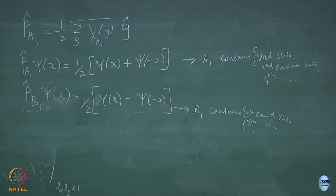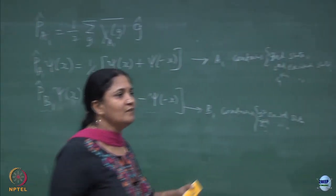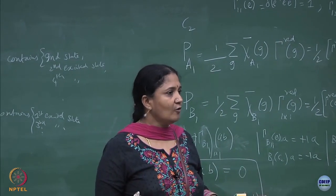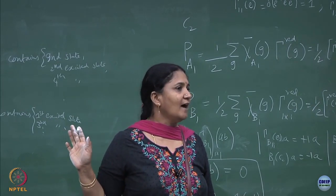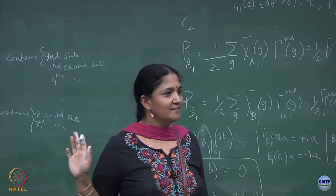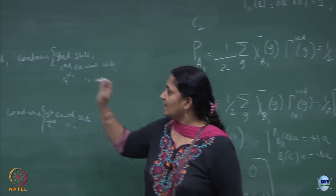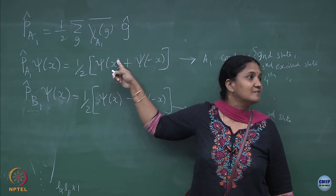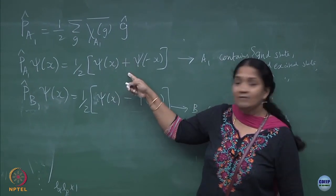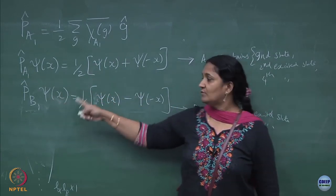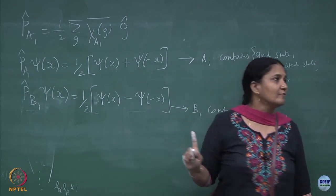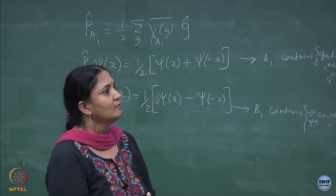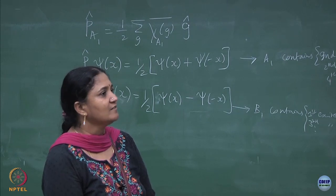So you can see that just the group symmetry — the simplest group symmetry C2 — tells you that the wave functions you find must belong to two one-dimensional representations. It is either going to be A1 (even wave function) or B1 (odd wave function). B1 contains the first excited state, third excited state, and all odd excited states. Now let me move to a non-trivial example. The simple 1×1 matrix case was a warm-up.